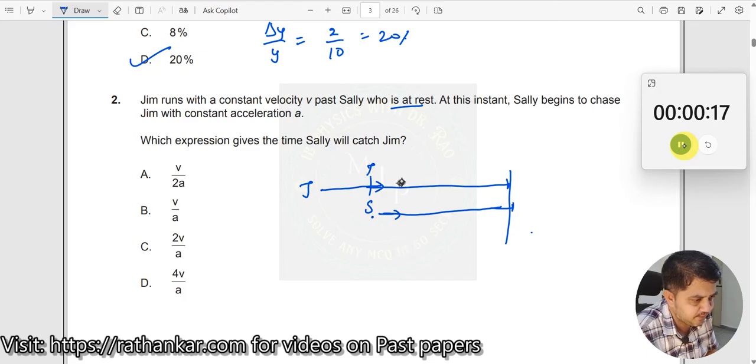So what we need to do is, let's say by the time, in a given amount of time, Jim takes a time t to cross this distance. Let's say s is the distance. In the same time,